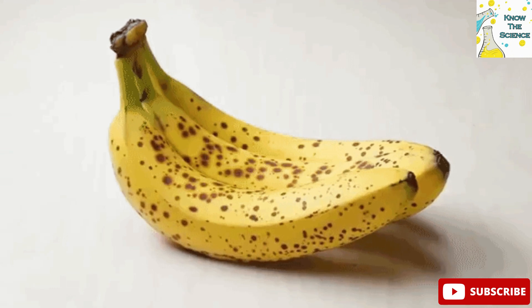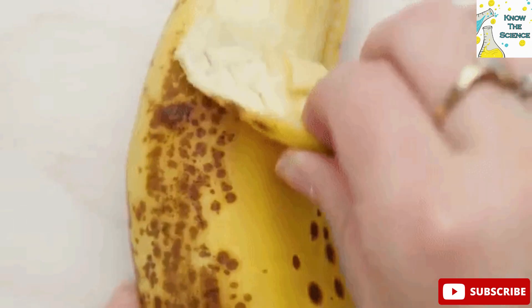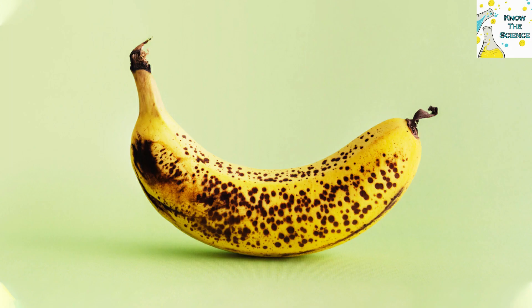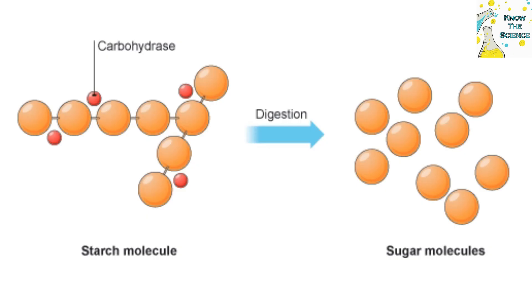Ripening of a fruit is a natural process wherein fruit becomes sweeter, less green, soft, and more palatable once harvested. A fruit's chemistry will change, including enzyme chemistry, during the process of ripening. Enzymatic breakdown and hydrolysis of polysaccharides like starch takes place, causing starch to break down into smaller molecules like fructose, glucose, sucrose, etc.